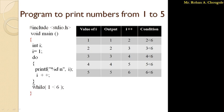After i becomes 6, it checks the while condition: 6 is less than 6 — no, it is equal to 6, so condition becomes false. Control moves outside the do-while loop and does not enter again. The output we get is 1, 2, 3, 4, 5. As explained, the control directly enters the do-while loop before checking the condition, so at least once the do-while loop will get executed.